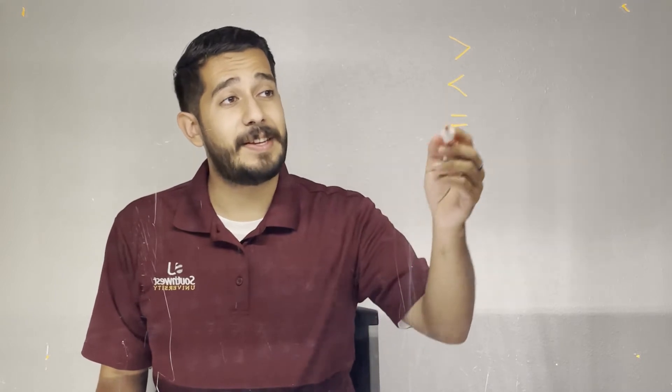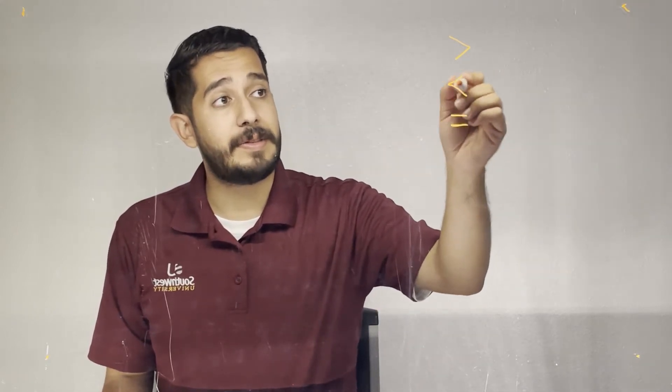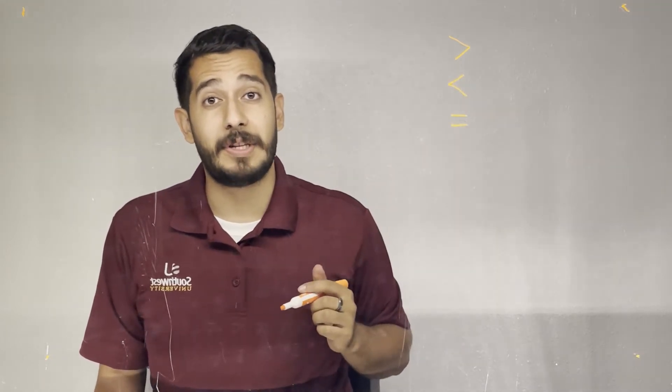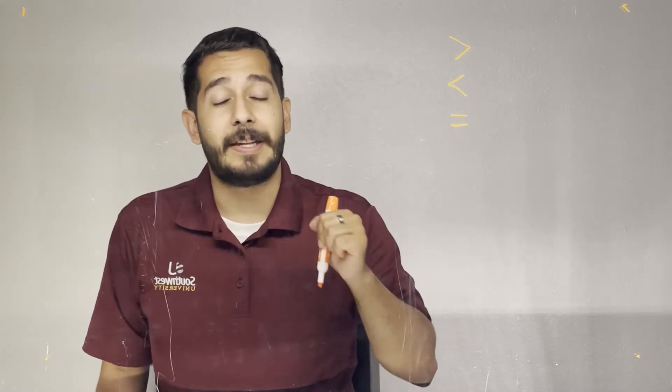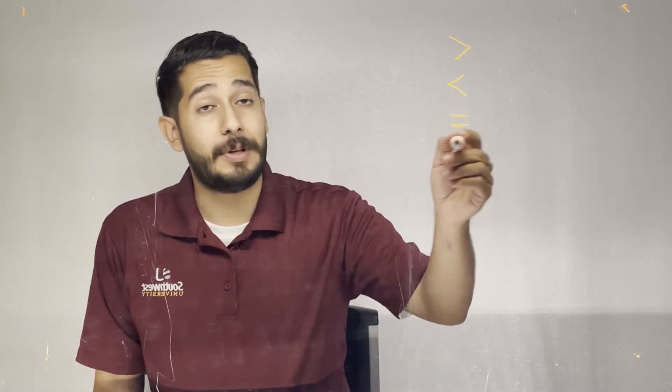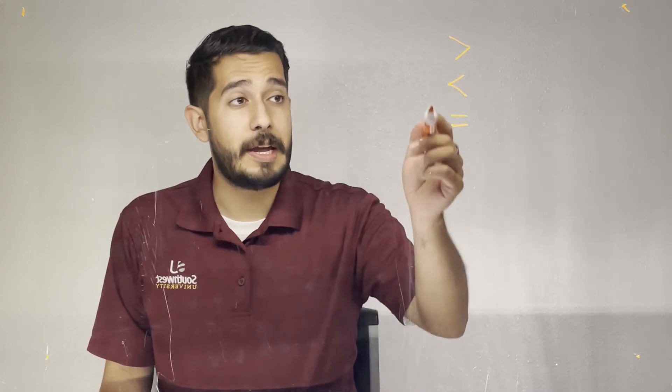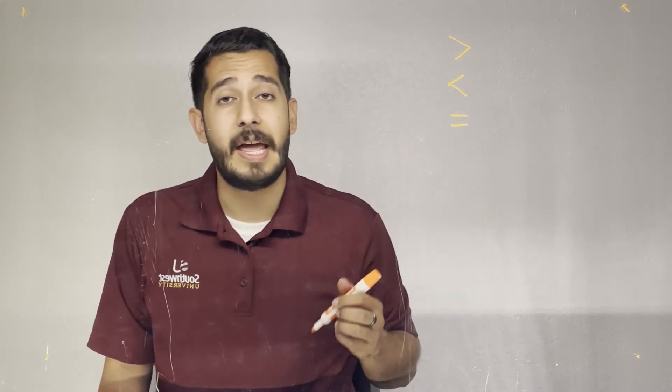On the other hand, for the less than symbol, the number on the left is going to be smaller or less than the number on the right. The smaller part of the symbol is towards the left, and that's where the smallest numbers go. The number towards the right is on the bigger part of the symbol, so that number is greater. The last symbol is the equal sign, which means that whatever number or expression on both sides of the equal sign is going to be the same.